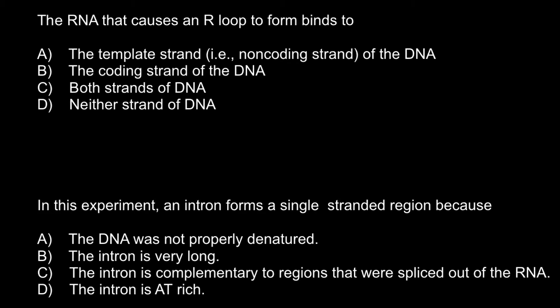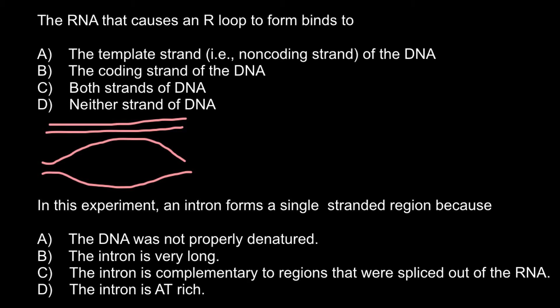Many people also confuse the template strand of the DNA and the coding strand of the DNA. Imagine that this is double-stranded DNA. When double-stranded DNA is used to make messenger RNA, the strands of the DNA separate and one strand is used as the template strand of the DNA to make a messenger RNA. We call this the template strand of the DNA, and this we call the coding strand of the DNA. I use the same color for this strand as for the messenger RNA because the code of the messenger RNA would be the same as the code of the coding strand of the DNA.